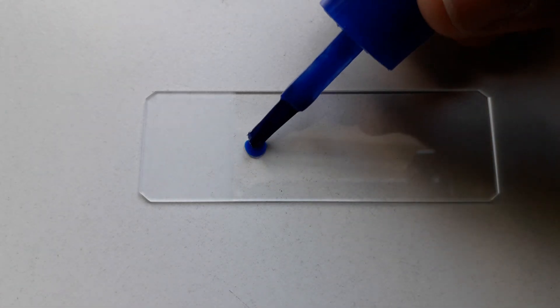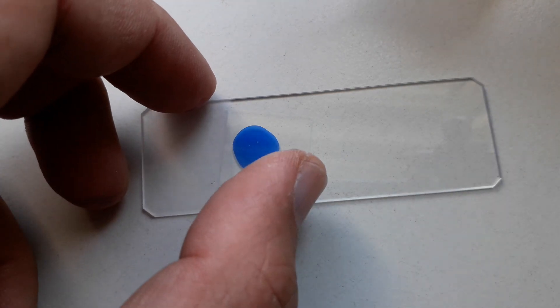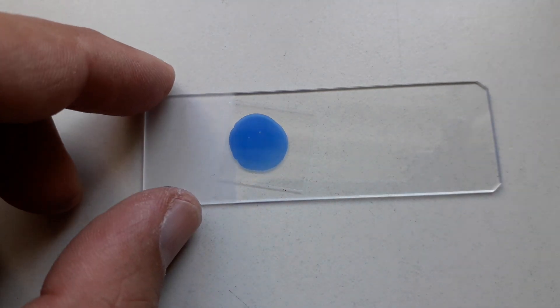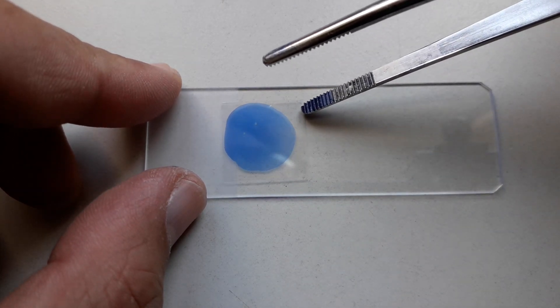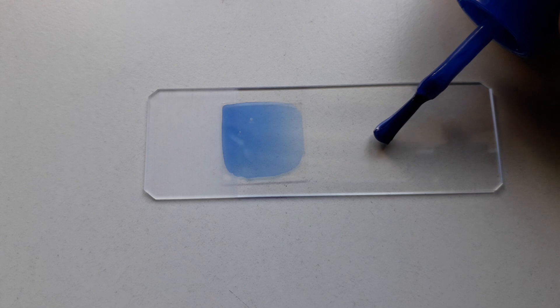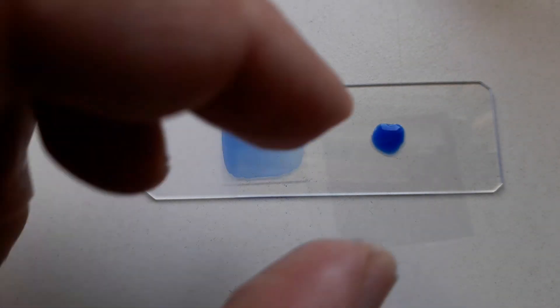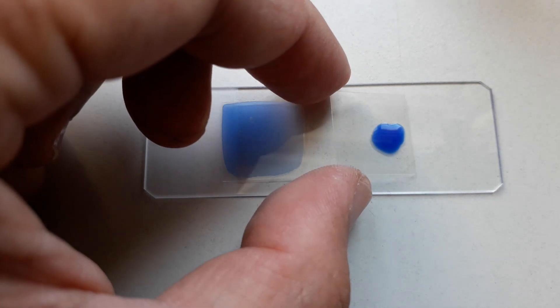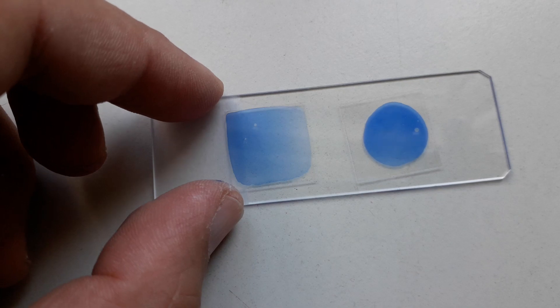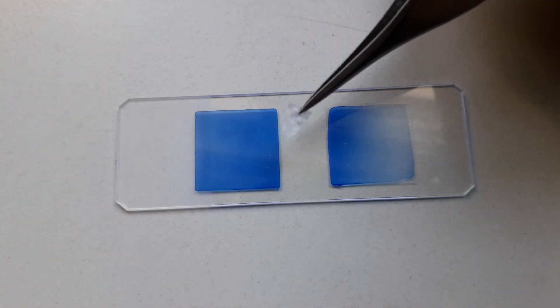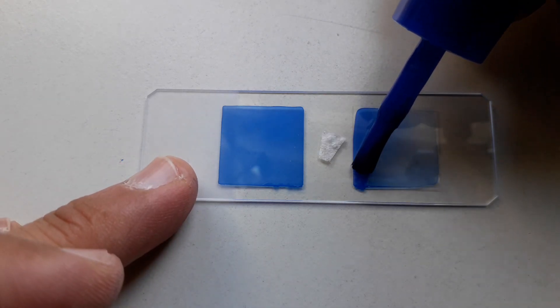Another possibility would be to use the nail polish to make such a spacer. Now I'm using the nail polish to glue two cover glasses to the slide. The cover glasses themselves will now act as a spacer. This is also quite easily done, as you can see. Do not use too much nail polish, otherwise it's going to take too long to dry.